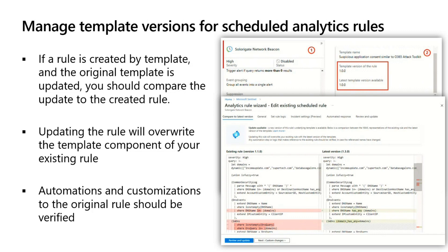Sentinel comes with analytics rules that you can use to populate your SIEM. It's important to keep in mind that there are versions — when you open some analytics rules, you might see a new version available pop-up showing what version you're currently running and what version is currently available. You can go in and compare the existing rule against the new one, seeing how things have changed and making a determination about whether you want to update the rule. Updating the rule will overwrite the template component of your existing rule.